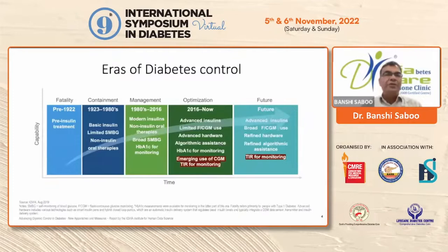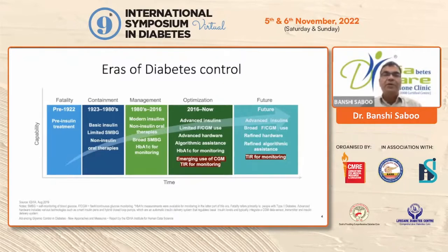We know that before 1922, when insulin was not available, there was hardly any way of monitoring or controlling diabetes. Then we started with insulin therapy. From 1980 to 2016, we had modern insulin and many more oral antidiabetic therapies. Most people started self-monitoring of blood glucose, and HbA1C — giving average glucose of the last three months — was established from around 1980 to 2015.